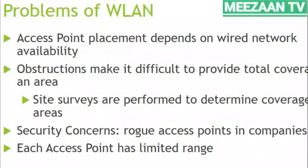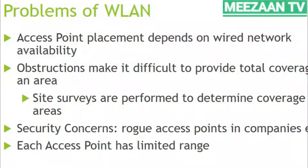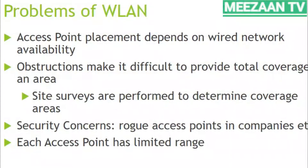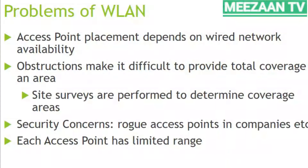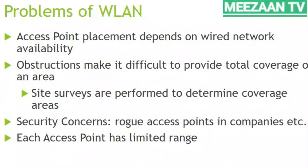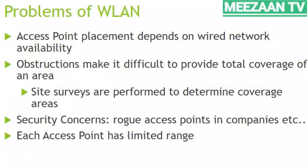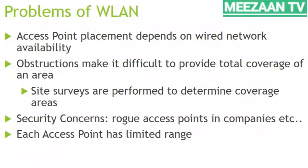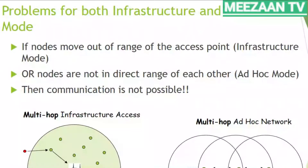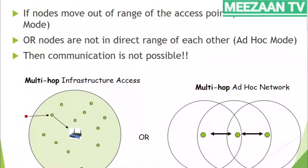Some problems arise with wireless LAN. The first is placement of the access point, which completely depends on the availability of the wired network. Obstructions make it difficult to provide total coverage of an area, so site surveys are performed to determine the coverage area. Security concerns also arise since signals are freely available within the coverage area.